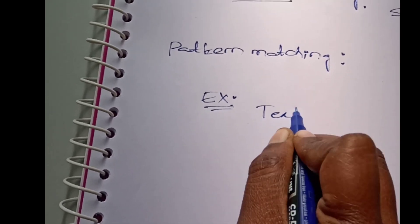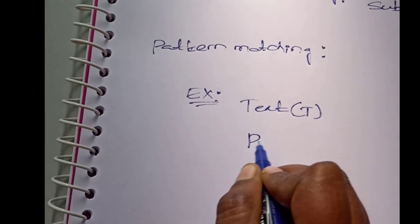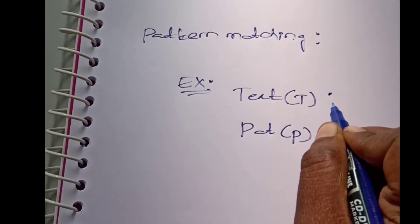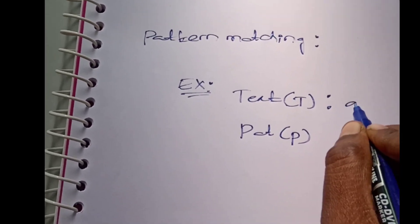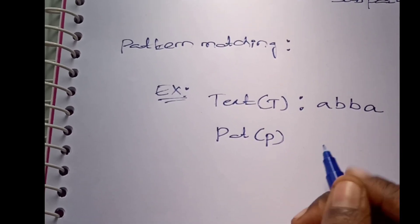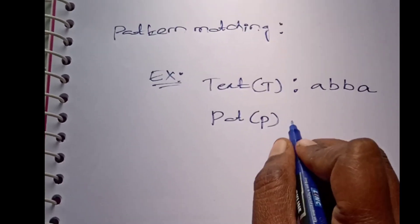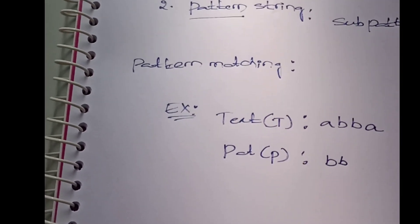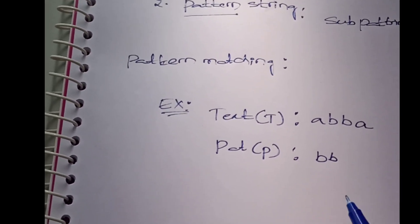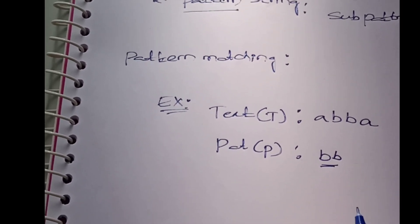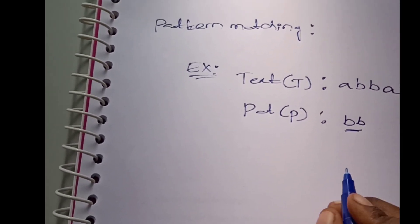The text string is denoted with T and the pattern string is denoted with P. For example, the text string is A B A B A and the pattern string is B B. We are going to check whether the pattern string is in the text string or not.